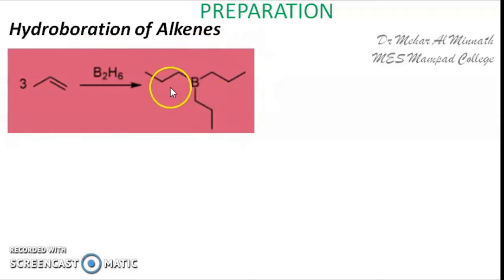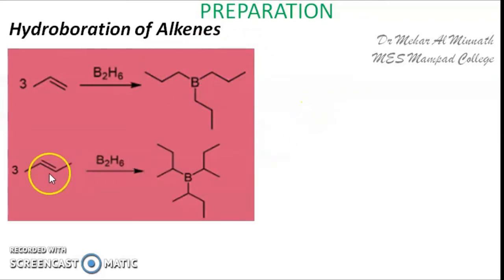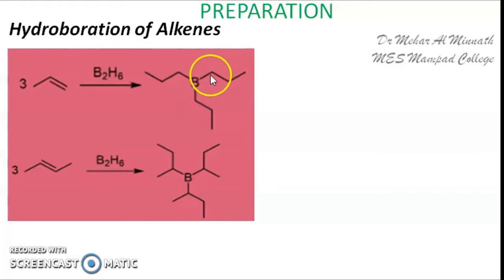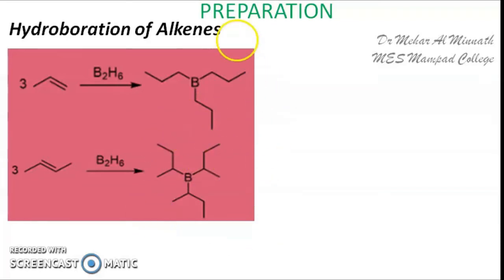Three molecules of this alkene are added to the diborane and you get trialkyl borane. Another alkene is again reacted with diborane; you get another trialkyl borane. Here, three molecules of the alkene are getting attached to the boron, giving trialkyl borane. Remember, depending upon the steric factor or the bulkiness of the alkene, the number of organic moieties attached to the boron differs.